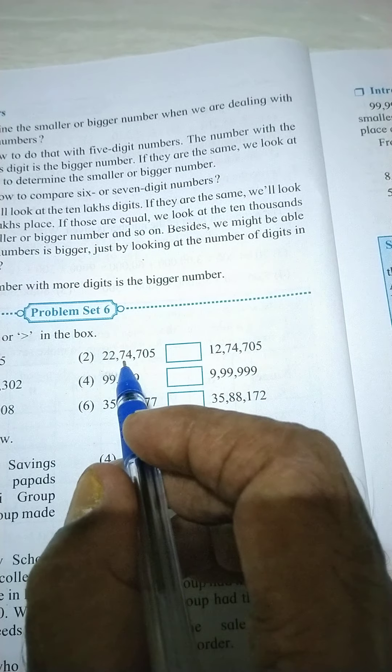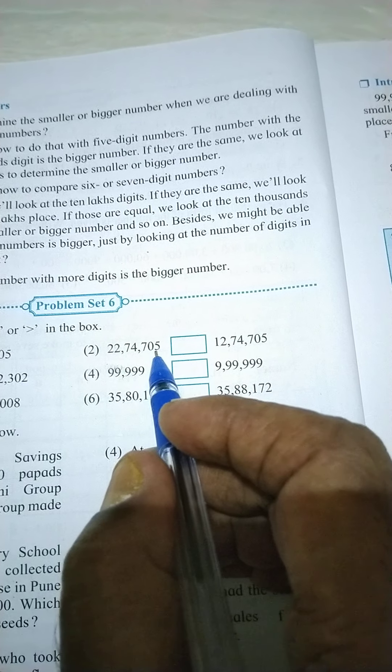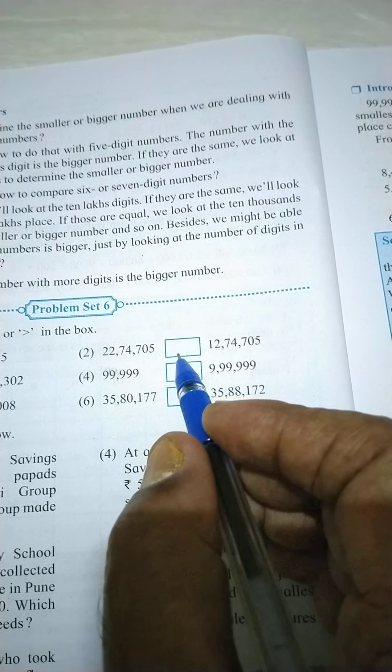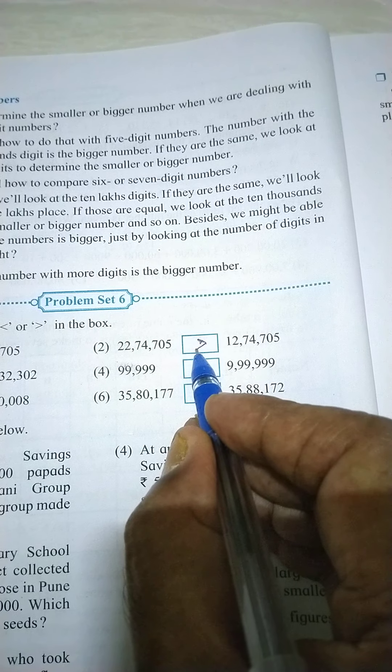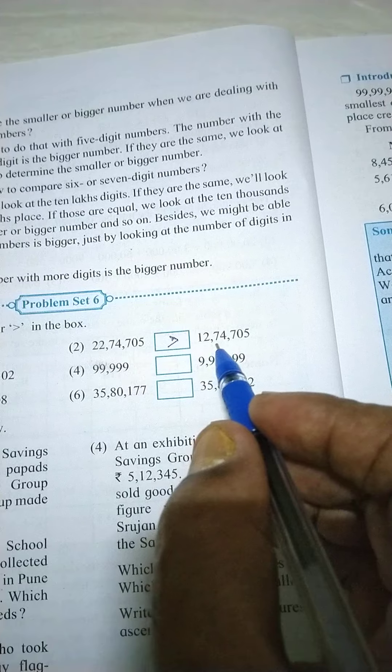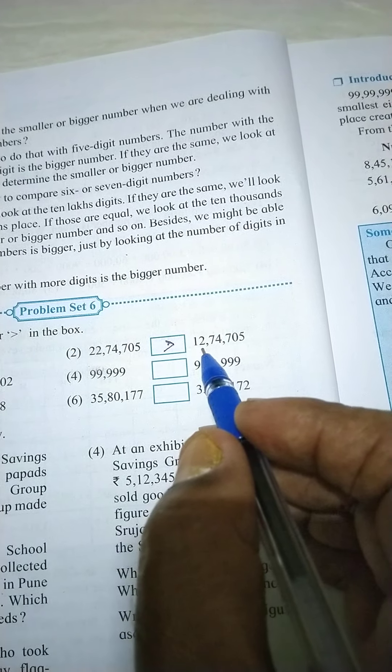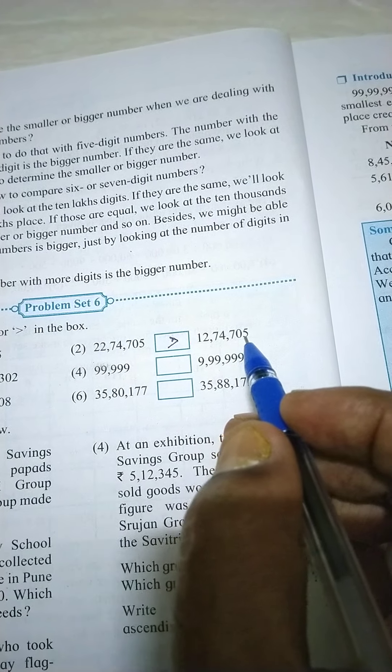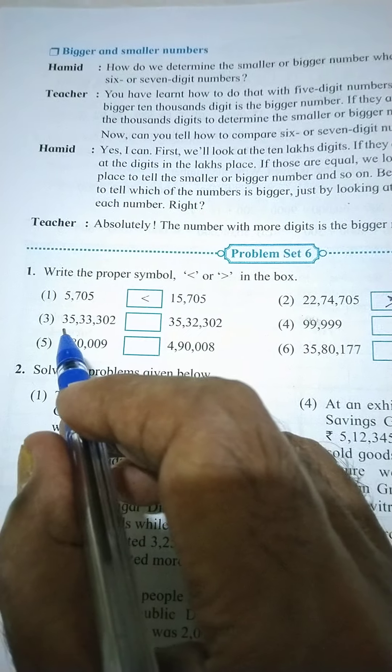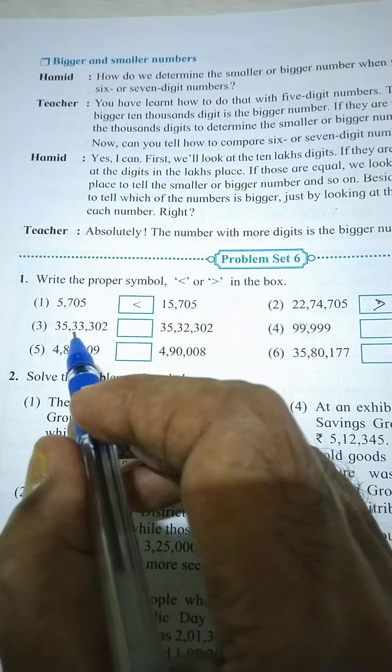Now can you tell how to compare six or seven digit numbers? Hamid: Yes, I can. First we look at the ten lakhs digit. If they are the same, we look at the digit in the lakhs place. If those are equal, we look at the ten thousands place to tell the smaller or bigger numbers, and so on. Besides, we might be able to tell which of the numbers is bigger just by looking at the number of digits in each number.